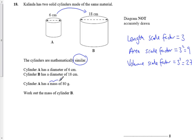Now, the mass is 80 grams. So actually, if they're made of the same material and they're solid, then actually this is going to get not 3 times heavier, it's actually going to get 27 times heavier. So the mass of Cylinder B is therefore going to be 80 grams multiplied by 27.